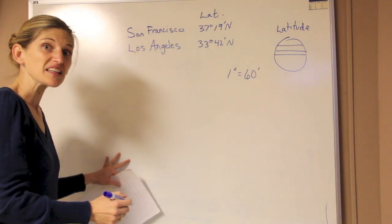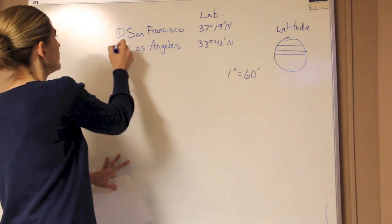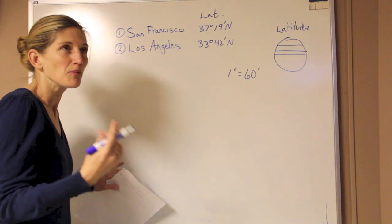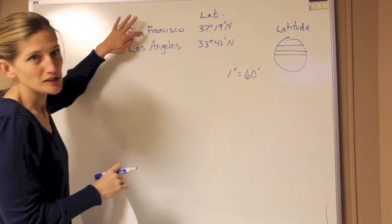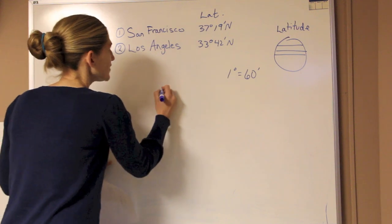So what we're just going to do is some basic subtraction. We're going to take the one that's farther north, which is San Francisco, and we're going to subtract Los Angeles from it. And we actually, most of us already know that San Francisco is in Northern California, Los Angeles is in Southern California.